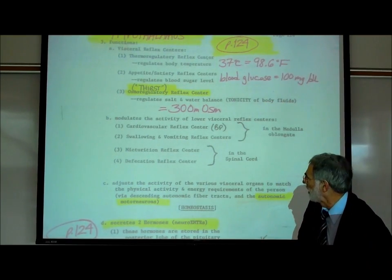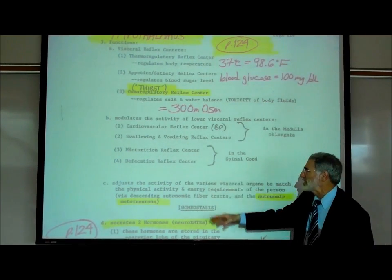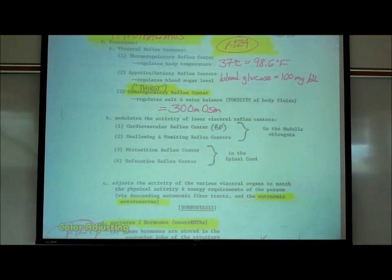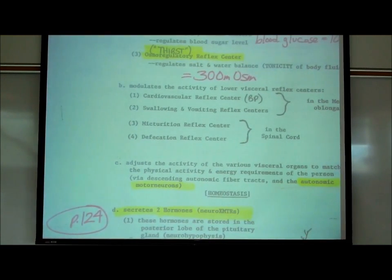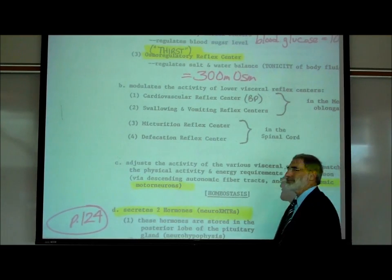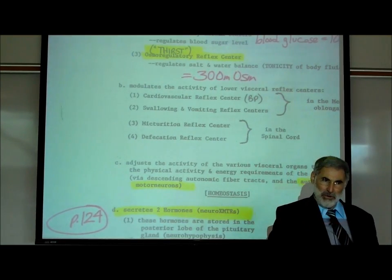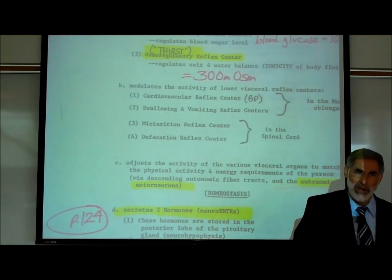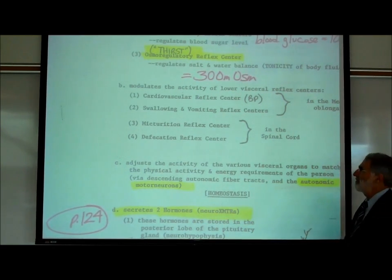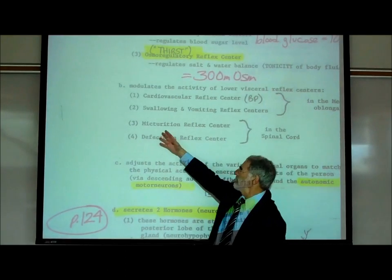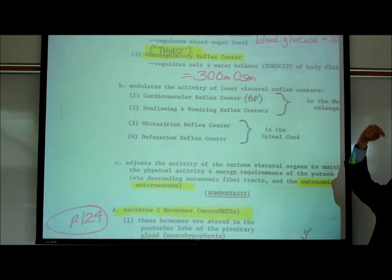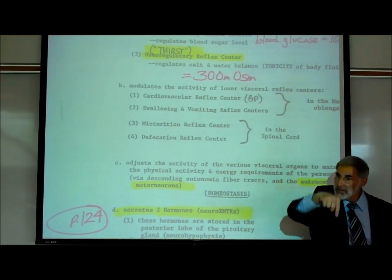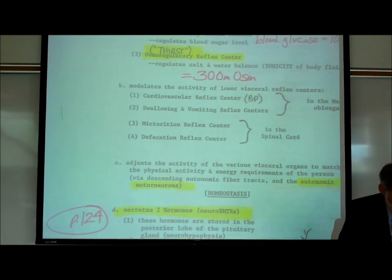In our spinal cord we have a micturition reflex center and a defecation reflex center — that's number one and number two. There's a control center in our spinal cord that affects whether we feel we need to urinate or defecate. Urinating is also known as micturition, and this is influenced by signals sent from the hypothalamus down to these lower control centers.